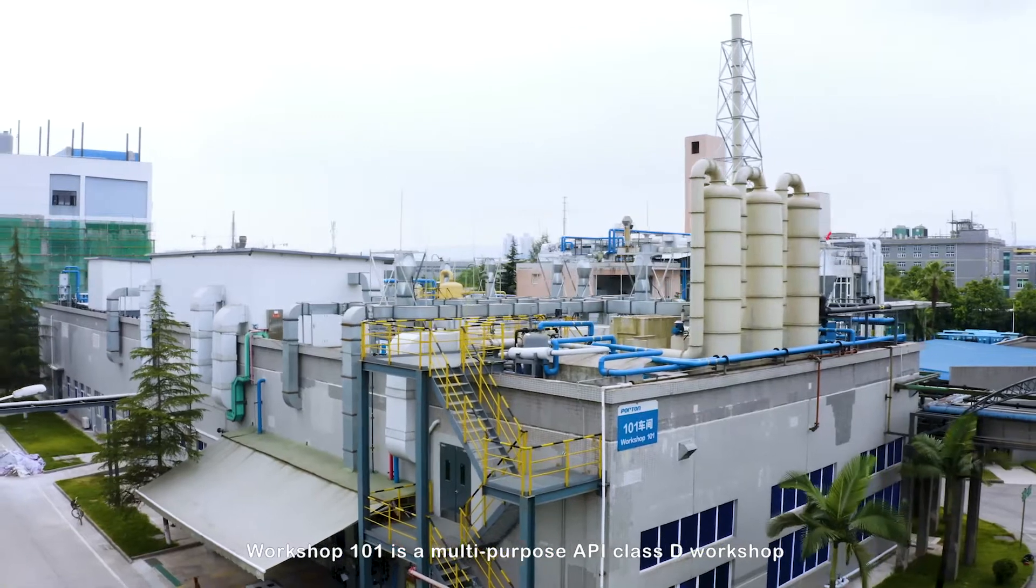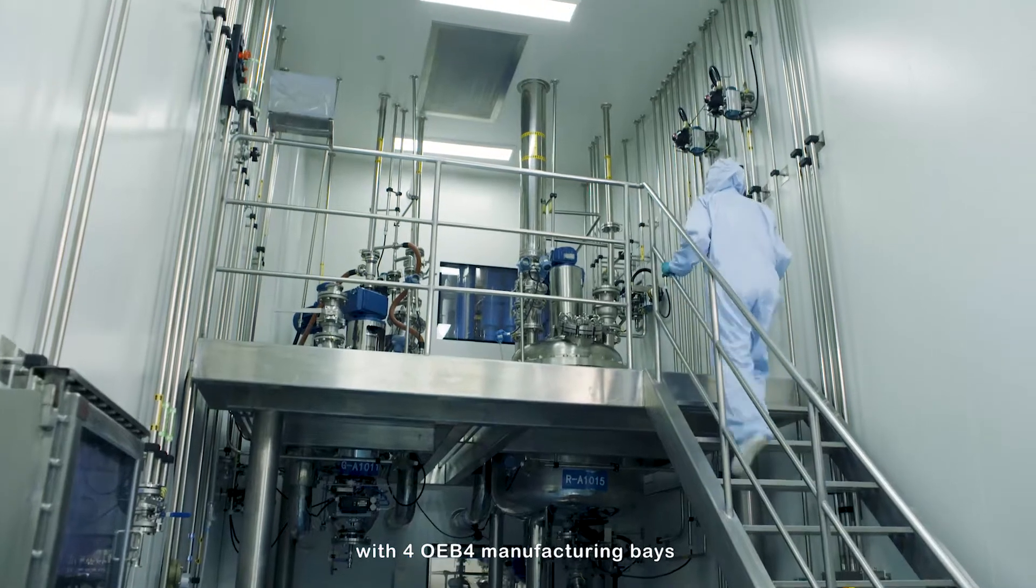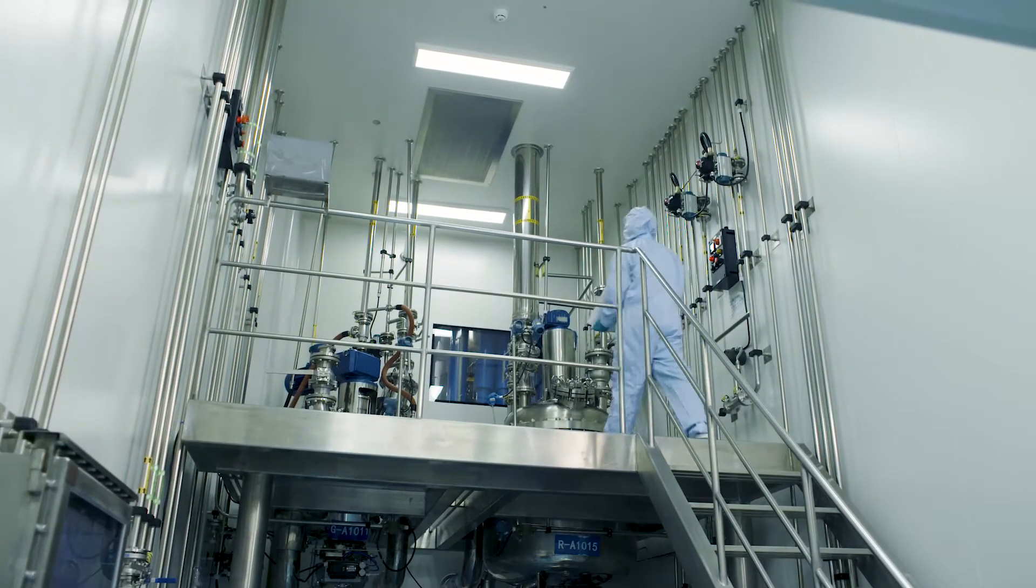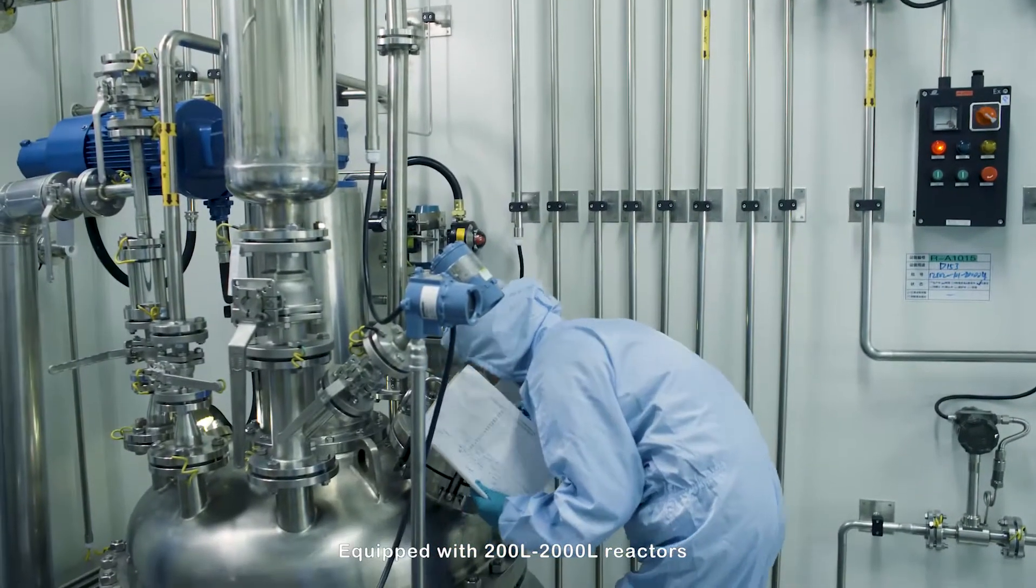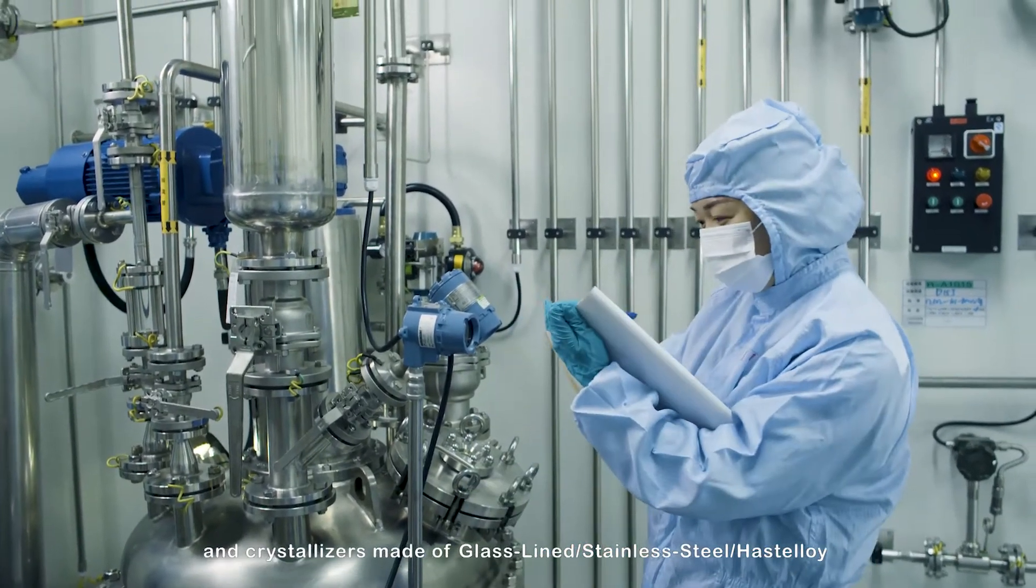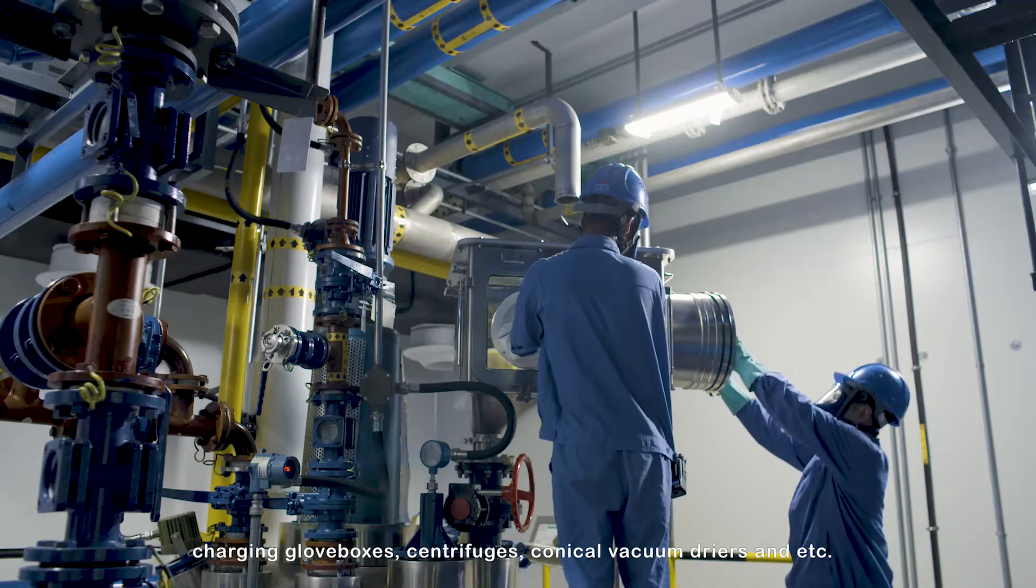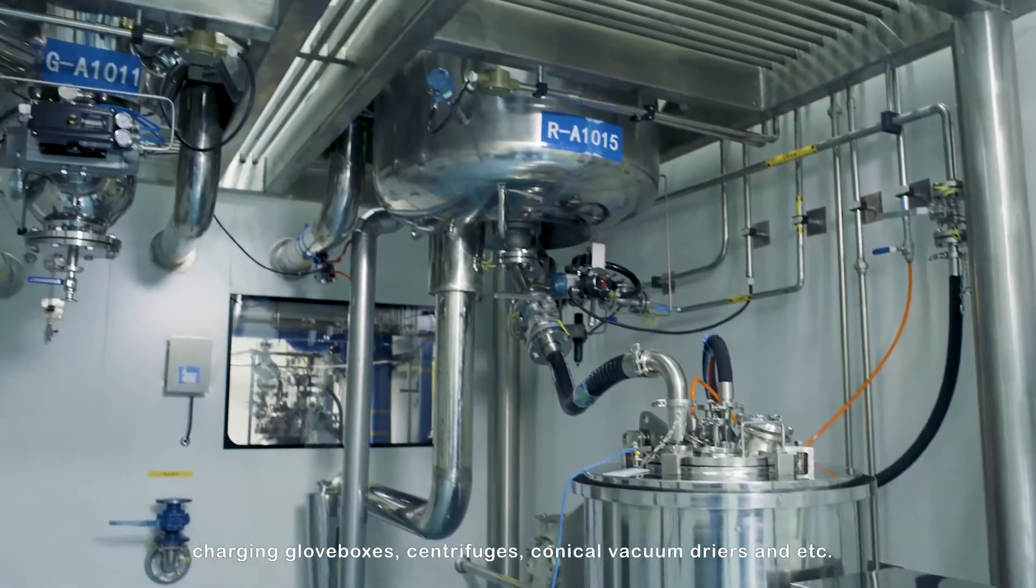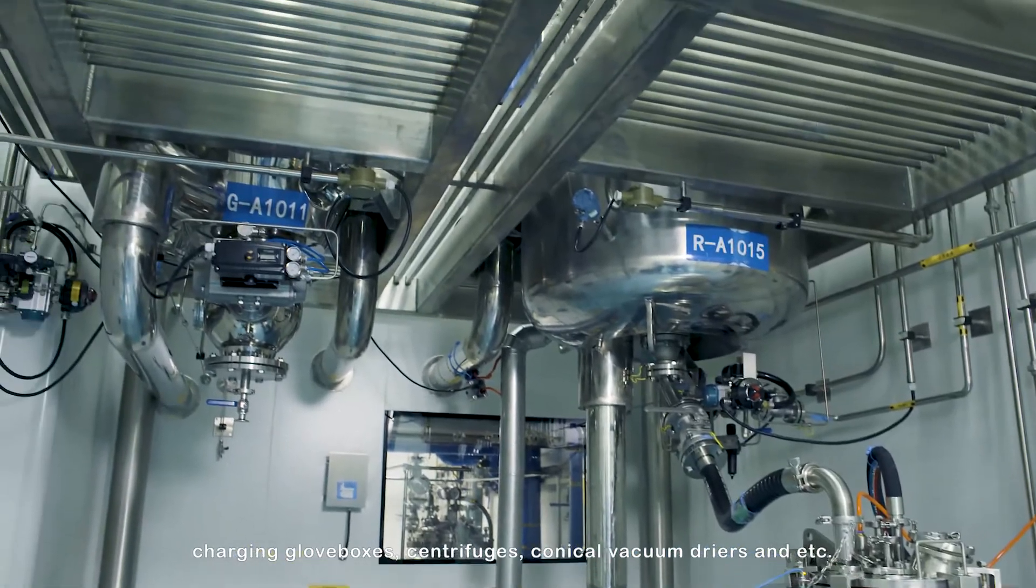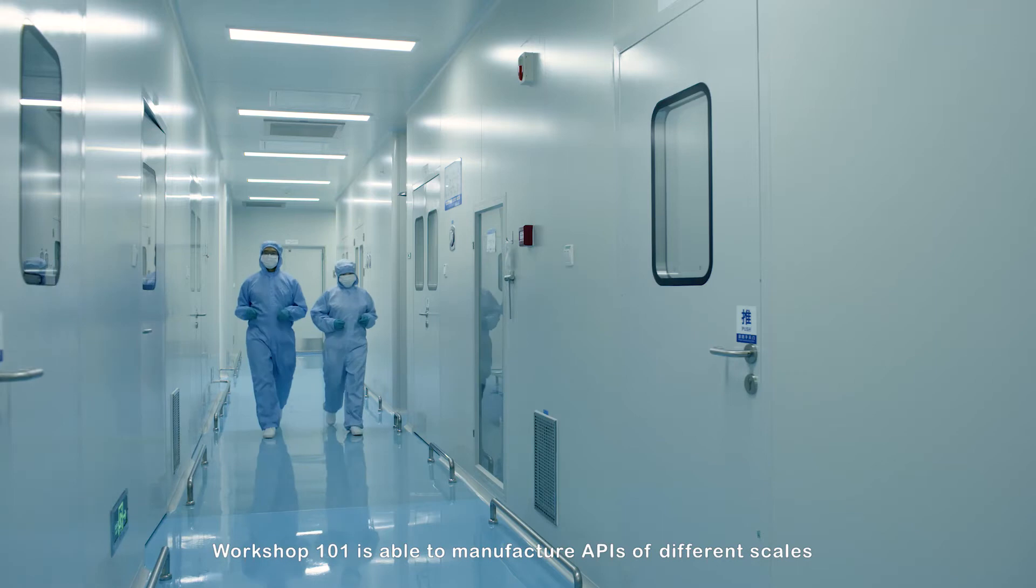Workshop 101 is a multi-purpose API Class D workshop with 4 OEB4 manufacturing bays. Equipped with 20 2,000-liter reactors and crystallizers made of glass-lined, stainless steel, hastelloy, charging glove boxes, centrifuges, conical vacuum dryers, and etc. Workshop 101 is able to manufacture APIs of different scales.